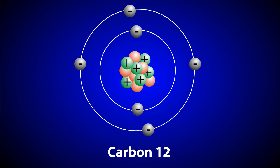Not all atoms of an element are exactly the same. For instance, here's an example of a carbon atom in its most common form. Notice that it has six protons and six neutrons in its nucleus. The fact that it has six protons is what makes it an atom of carbon.